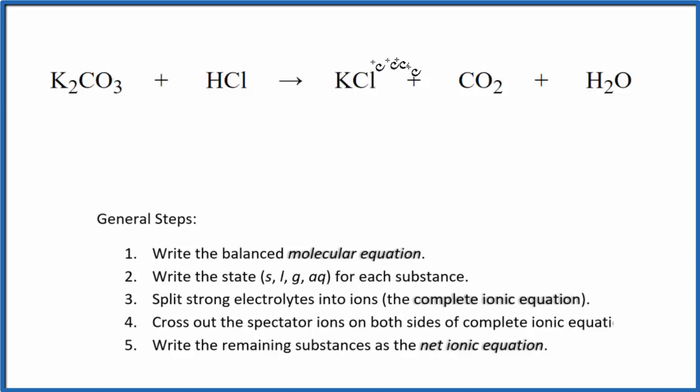Understand that when this reaction takes place, we first get KCl plus H2CO3, which is carbonic acid, but that decomposes into carbon dioxide and water so that we end up with this as our full equation. We're going to skip this step and just write the net ionic equation for K2CO3 plus HCl yielding KCl, carbon dioxide, and water, just to be clear.